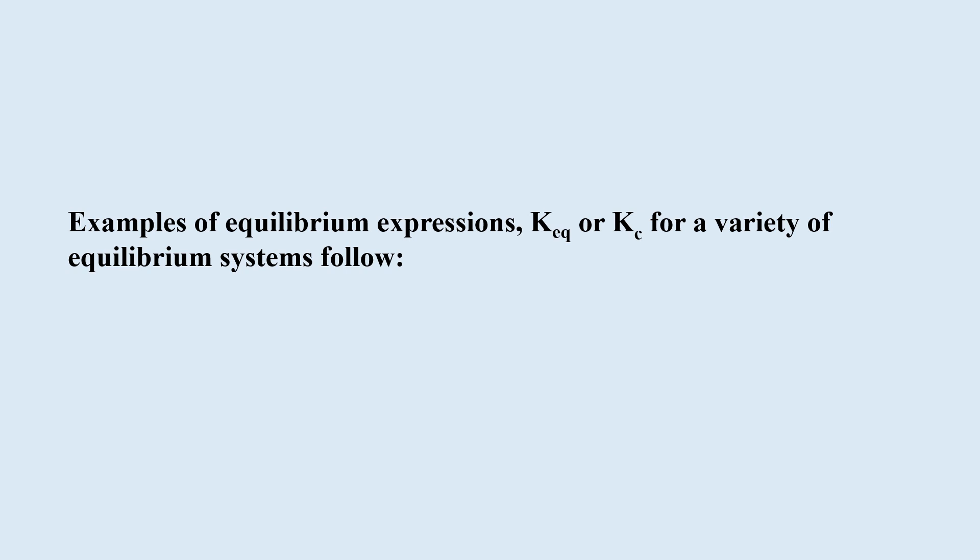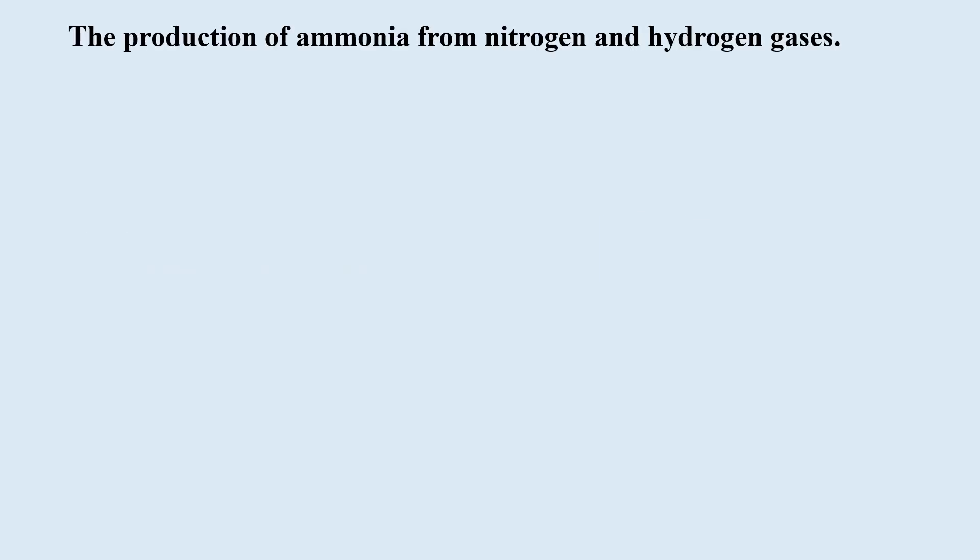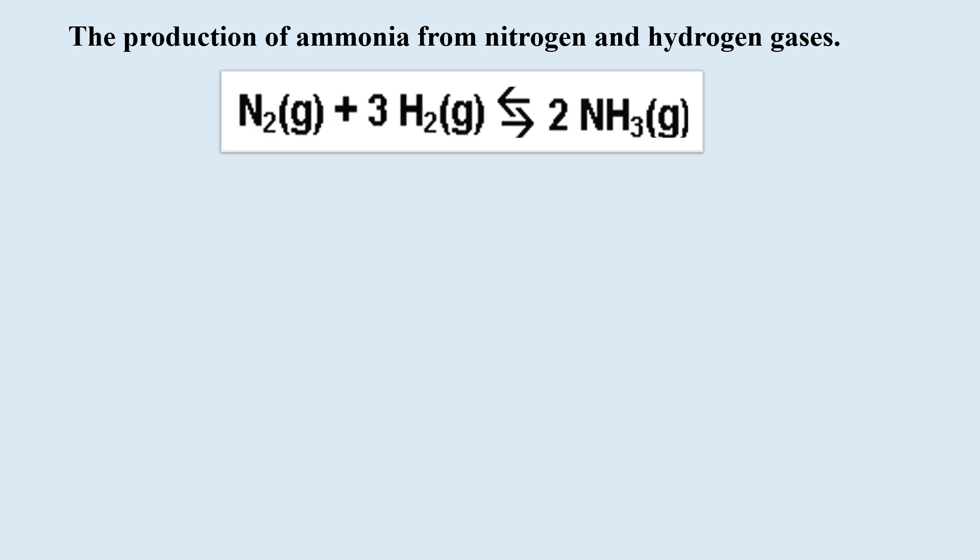Examples of equilibrium expressions KEQ or KC for a variety of equilibrium systems follow. For example, the production of ammonia from nitrogen and hydrogen gases. Where 1 mole of nitrogen gas N2 reacts with 3 moles of hydrogen gas H2 is in equilibrium with 2 moles of ammonia NH3 gas.